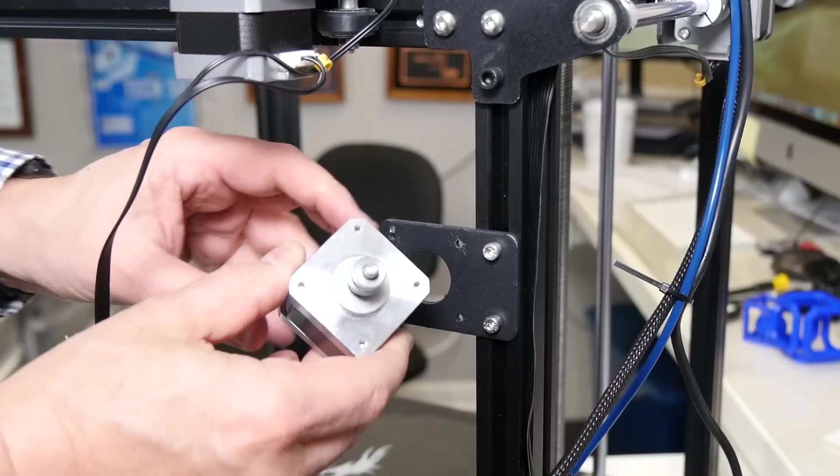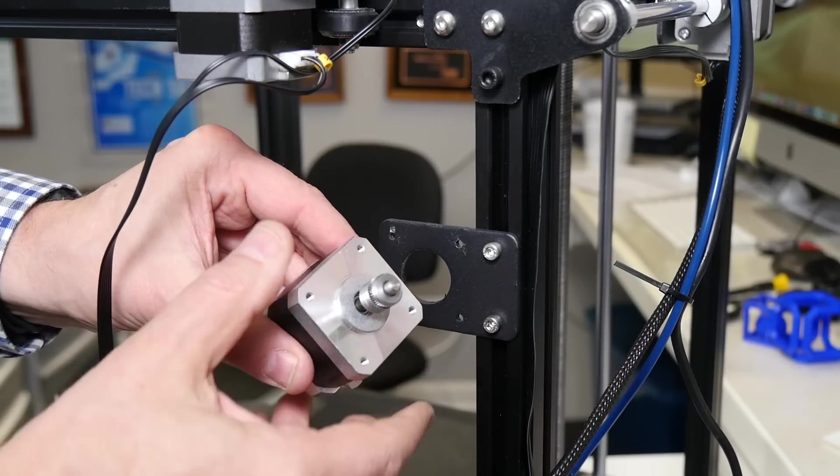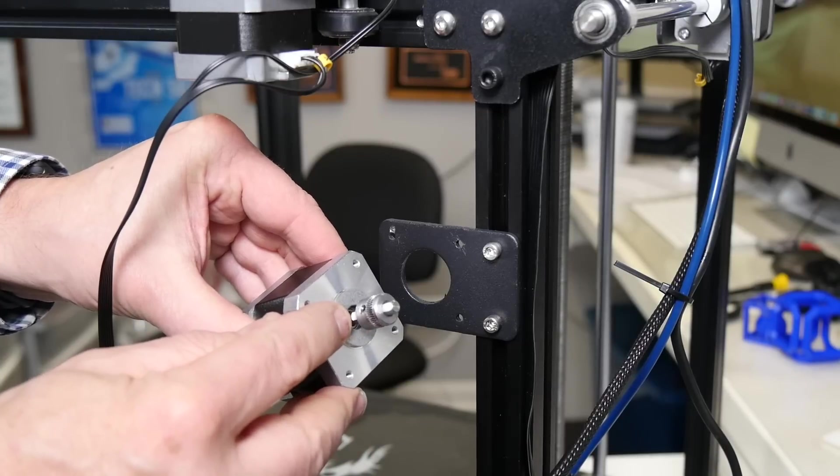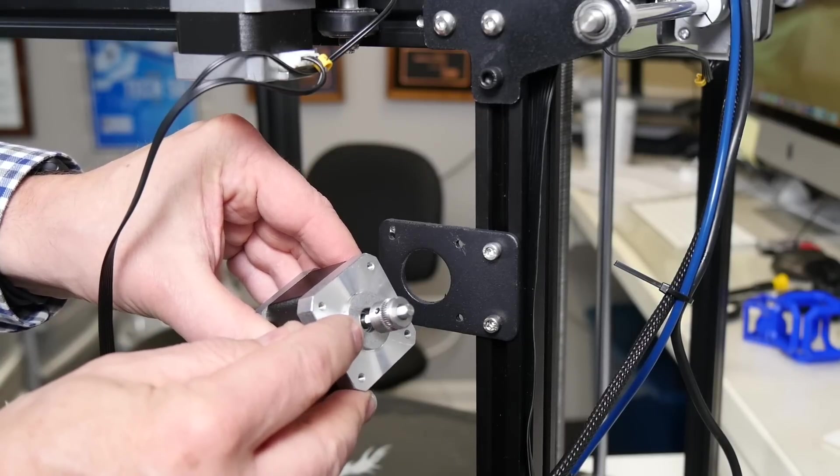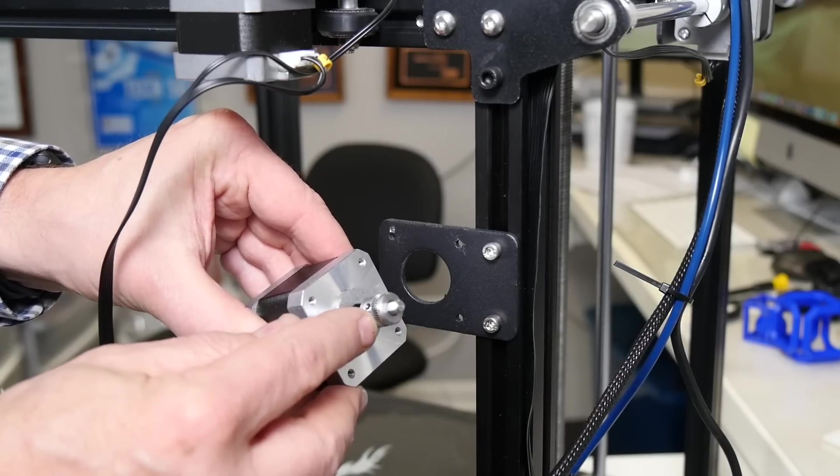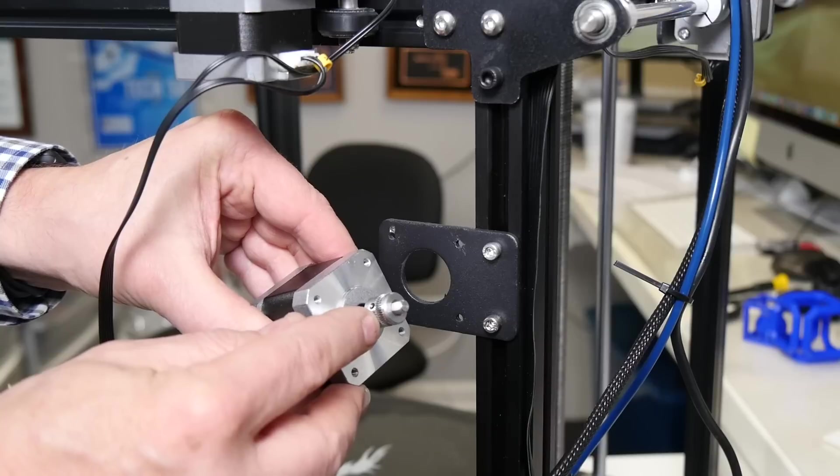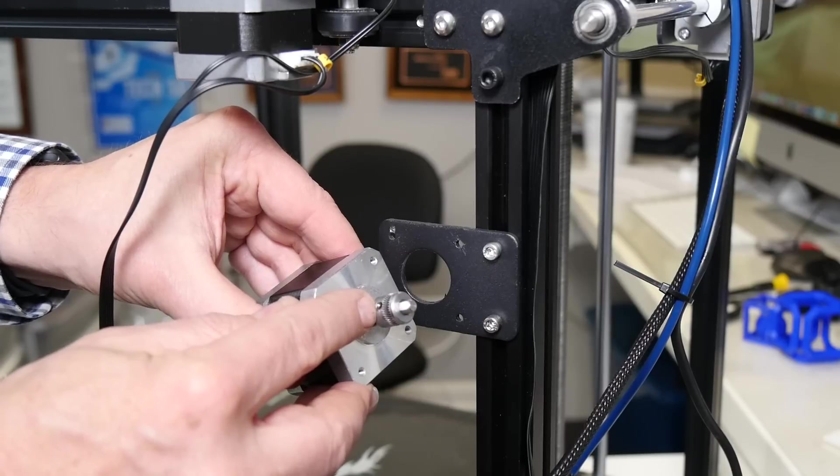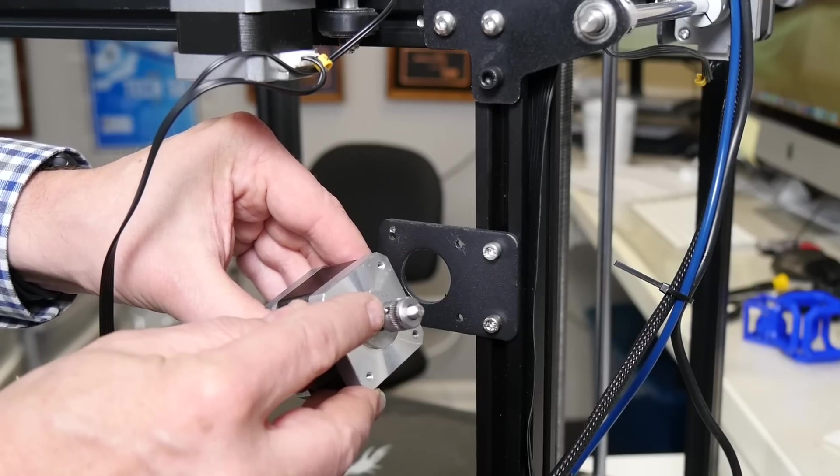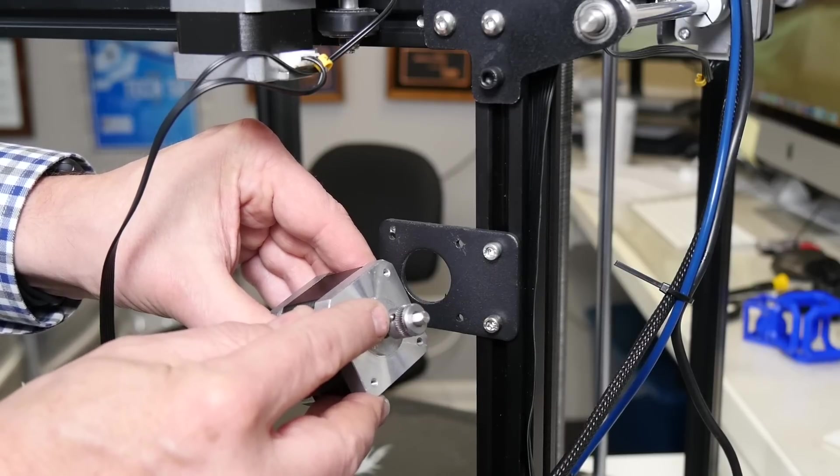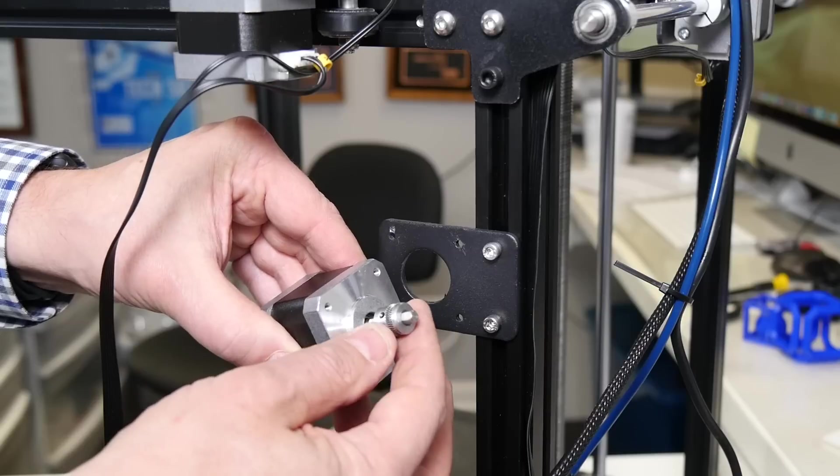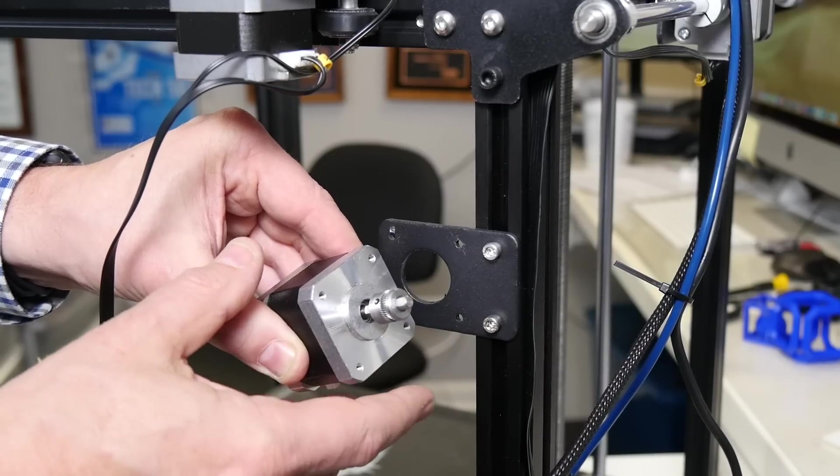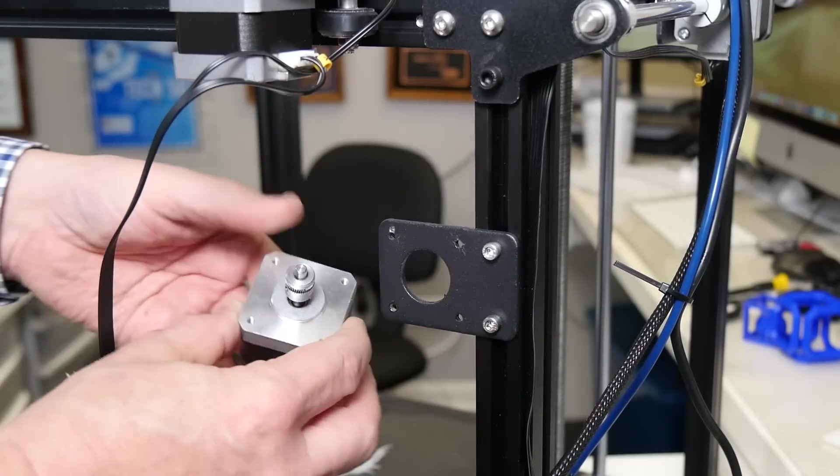Okay, you'll notice here that we've placed the new gear onto the stepper motor. We've made sure that we've set the grub screw and tightened it down. In our case, there was a slight burr on the shaft of the stepper motor that was caused by the set screw from the other gear. I took a little bit of 600 grit sandpaper and sanded that burr down in order to get it to fit.